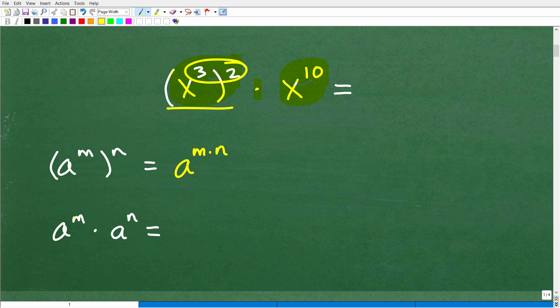Okay, how about this? We have a to the m times a to the n. What is this saying? Well, it's saying that when you're multiplying powers that have the same base, what do you do? Well, the rule goes like this. It's a to the m plus n. You add the exponents. Let me give you a quick example for these right here.